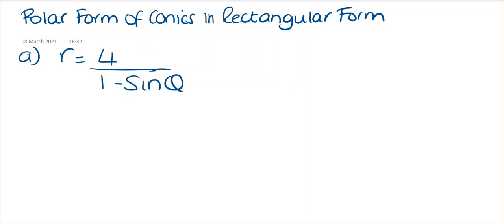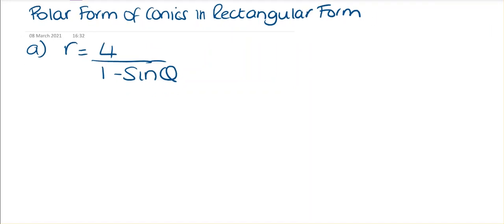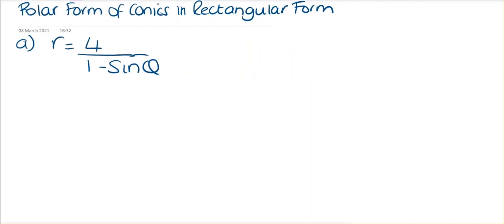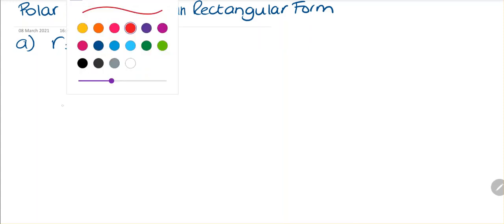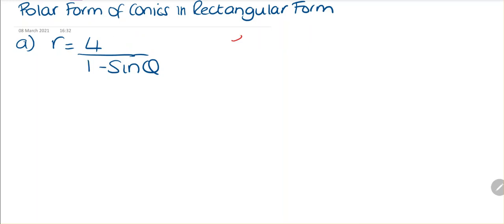Polar form of conics in rectangular form. We're given the question r is equal to 4 divided by 1 minus sine of theta. We need to find the eccentricity and the directrix.